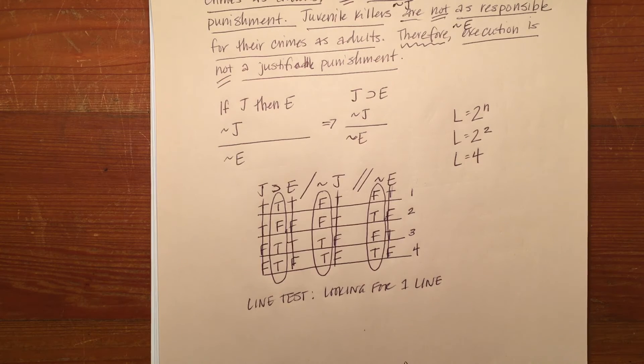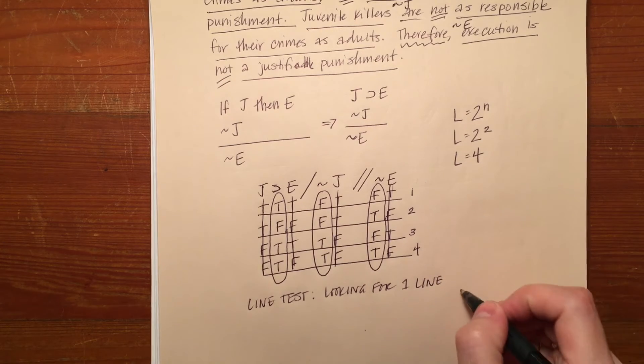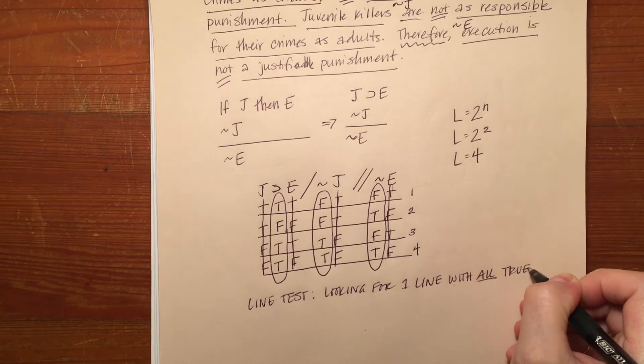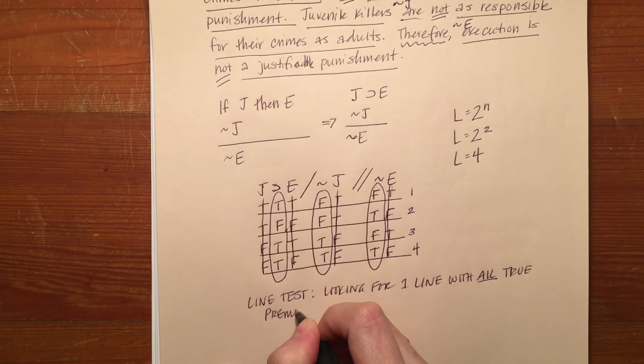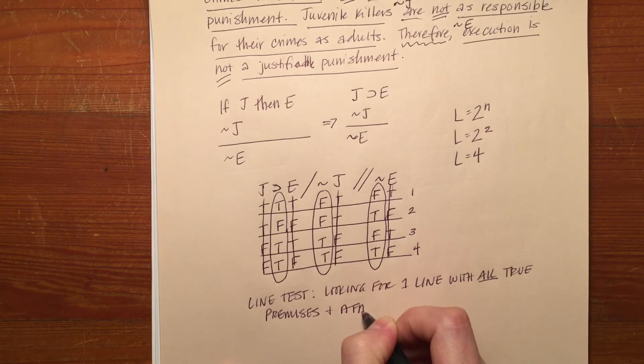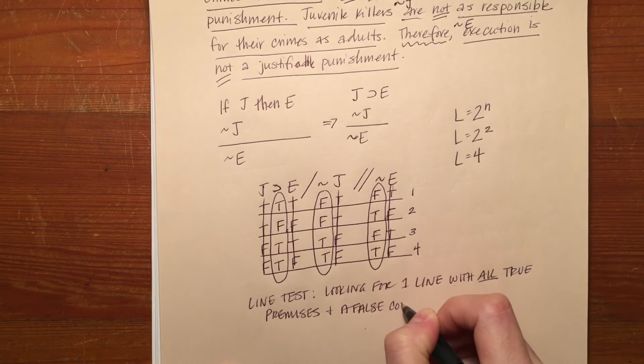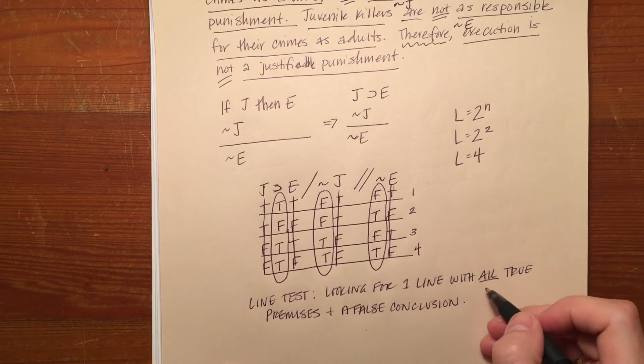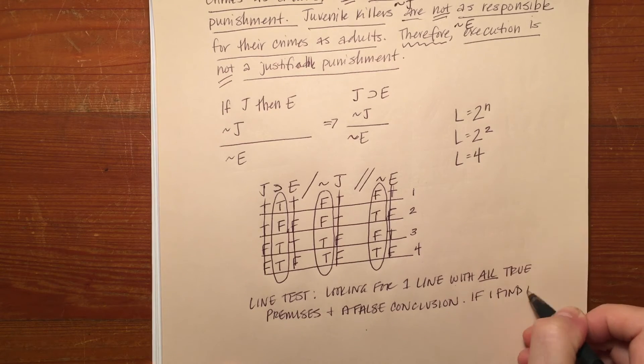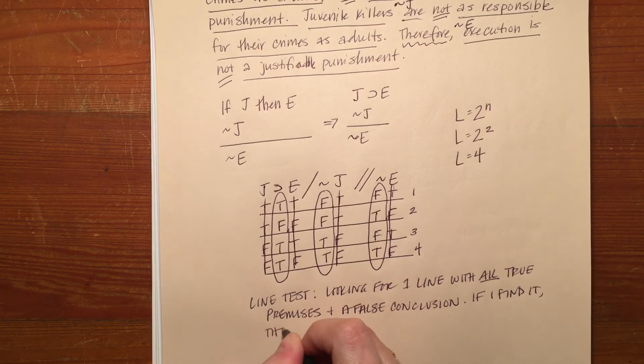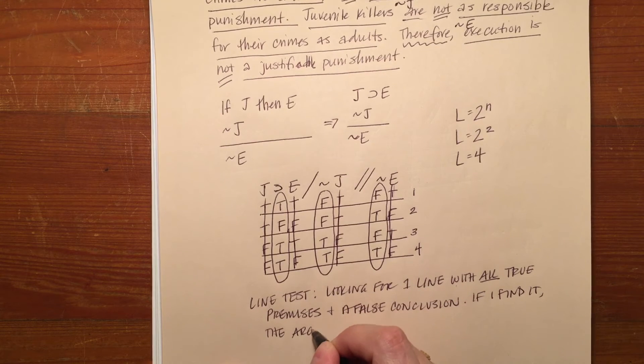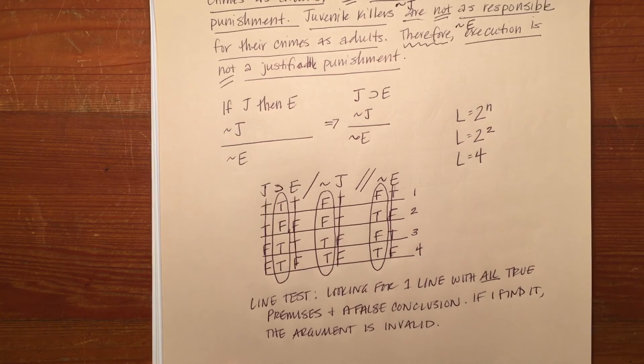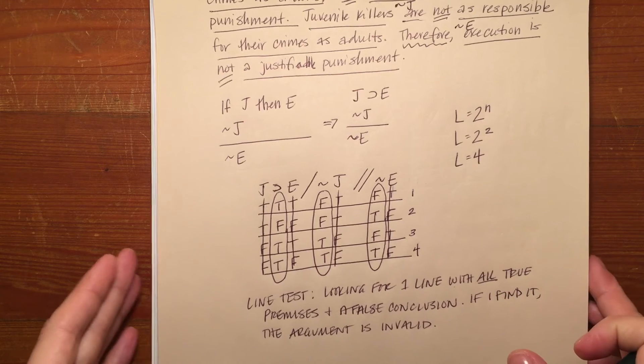So I'm looking for one line with all true premises. They have to be all true, not just some of them, and a false conclusion. If I find that line, the argument is invalid. If I do not find that line, then the argument is valid.